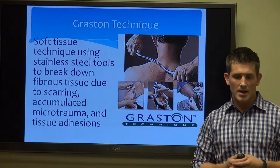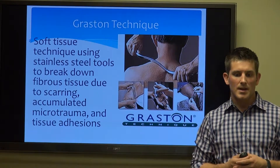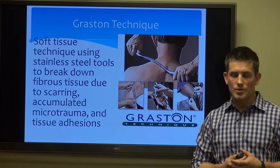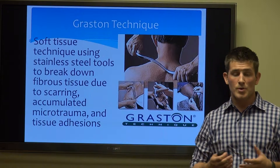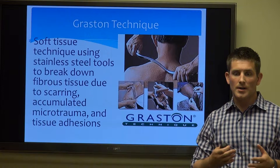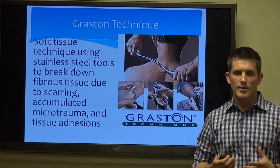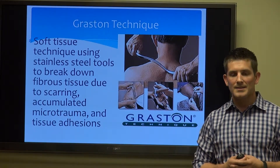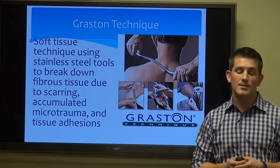Graston Technique is another soft tissue technique. This uses stainless steel tools to break down fibrous tissue due to scarring, accumulated microtrauma, and tissue adhesions. Oftentimes in the body, multiple muscles cross multiple joints at any given time, and some of those muscles get stuck when trying to do different movements around a certain joint. Graston is very good for extremity complaints — golfer's elbow, tennis elbow, and some knee complaints — and is very good at getting into areas where sometimes the hands and fingers cannot.